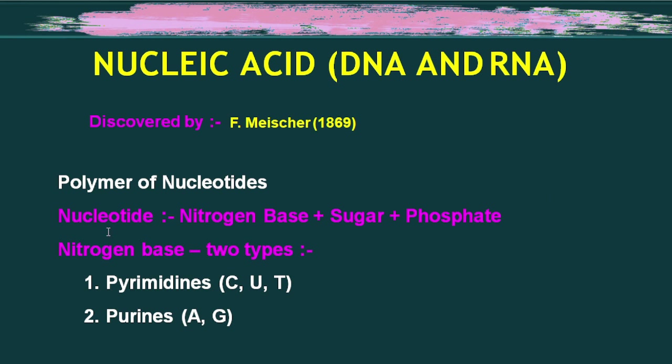What is a nucleotide? A nucleotide consists of a nitrogenous base, a sugar, and a phosphate group. In a nucleoside, however, the phosphate group is absent.